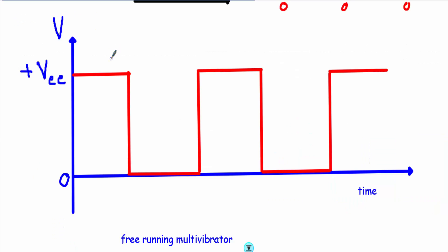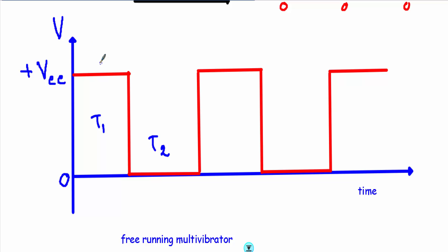If I analyze the output waveform of an astable multivibrator, we will get a square waveform. For T1 time interval it will be at plus VCC, and for T2 time interval it will be at zero. Plus VCC represents logic one and zero represents logic zero.